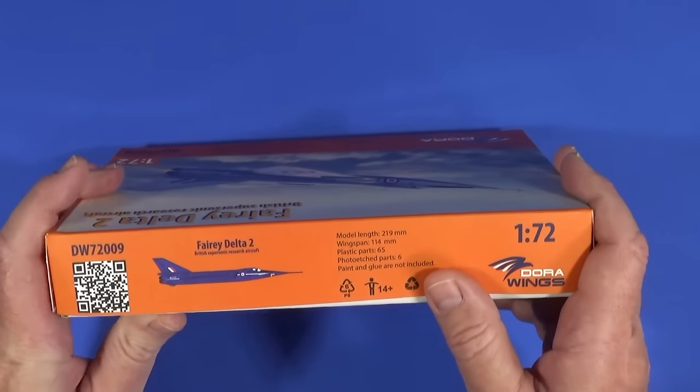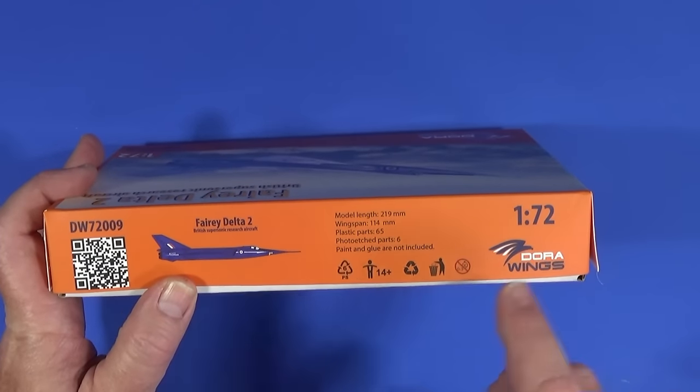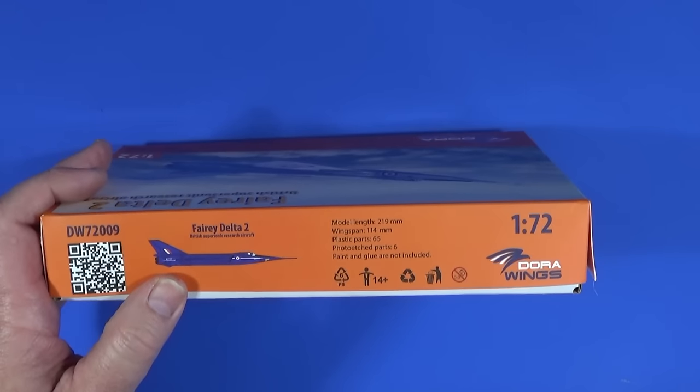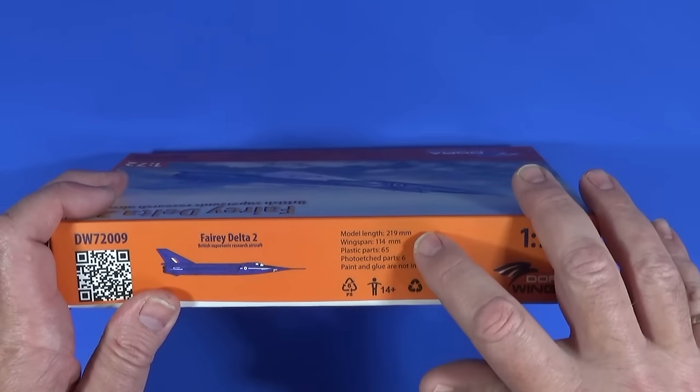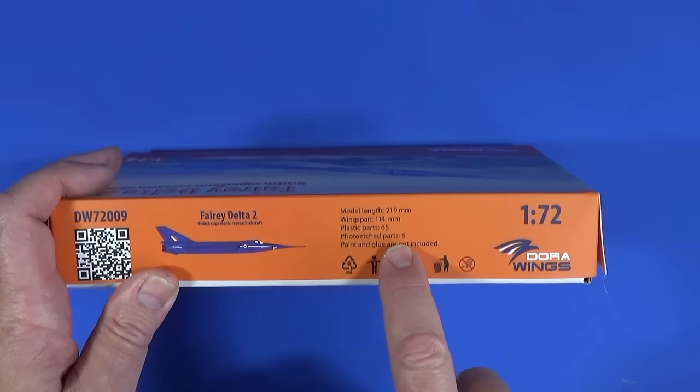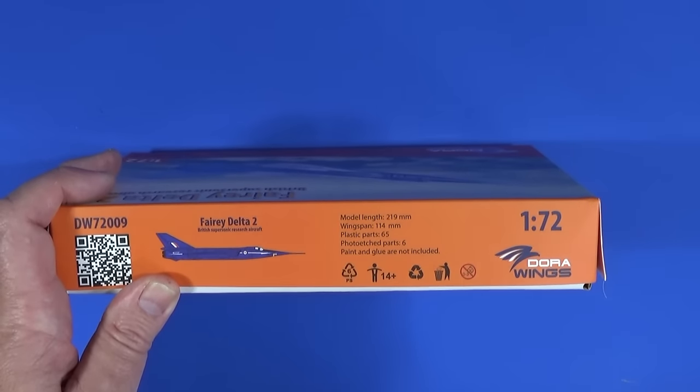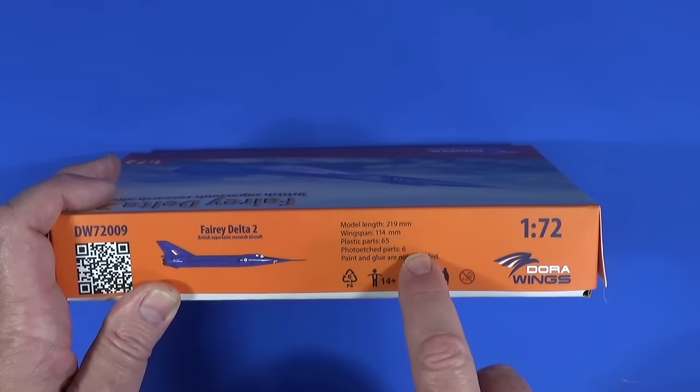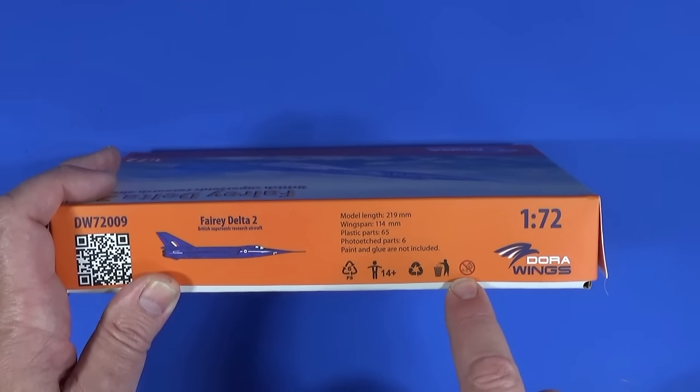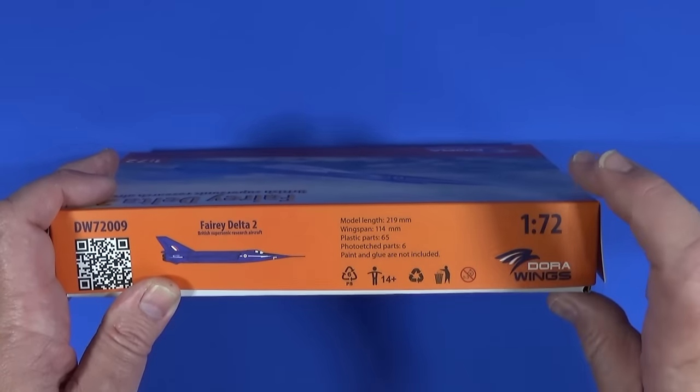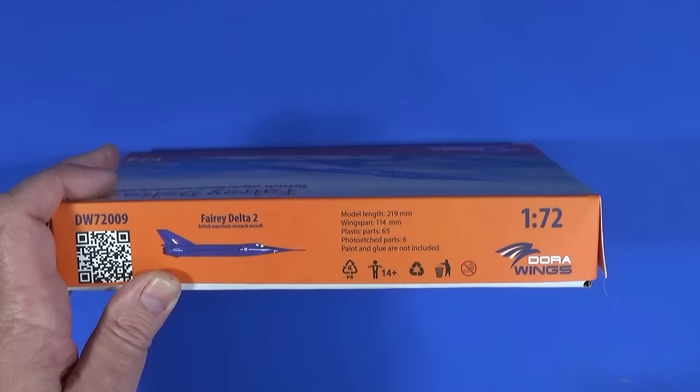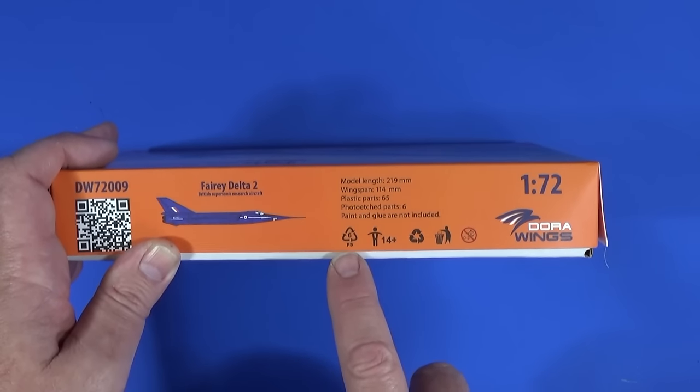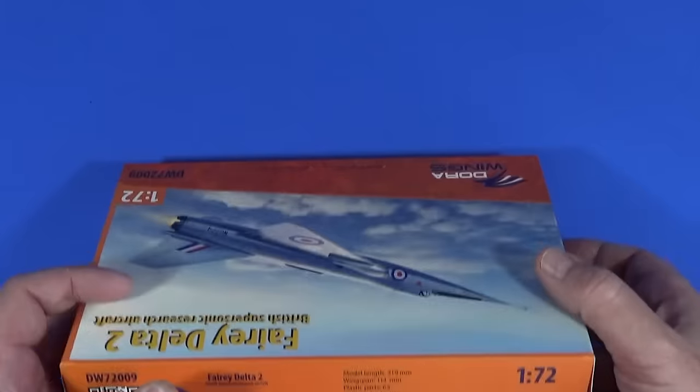On the other sides of the box, this side the QR code links to the Dora Wings website. There's one of the alternate schemes, the blue scheme which is the colors you'll see the FD2 in these days in a museum, I think at Cosford I believe. Model links again here. 65 parts, six pieces of photo etch, and of course it points out the paint and glue are not included. It's designed for people 14 plus years old, that's mainly because of the photo etch. It really shouldn't be anywhere near children up to three years old. They're saying please recycle the box. The box is completely recyclable. Dispose of things responsibly, and it's made of polystyrene, which is a group six plastic, so check with your council whether they will recycle group six plastics as well.